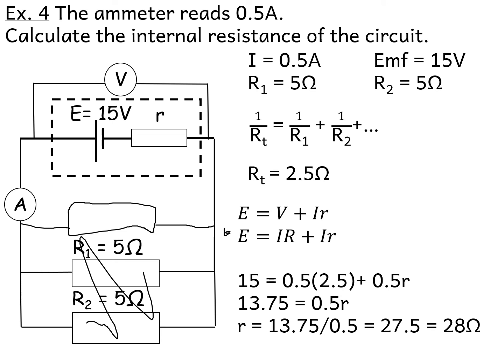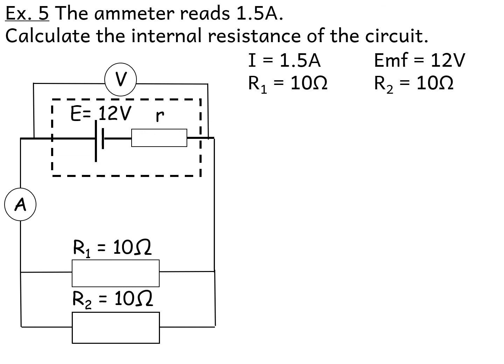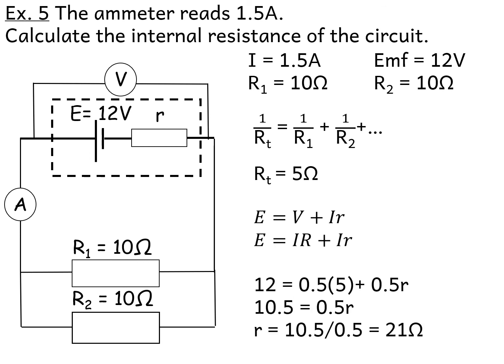Try this practice question yourself. It's similar to the previous one — two resistors in parallel, both 10 Ω, so the total resistance is simply 5 Ω using the shortcut. Write down the equation, pick the second one since we have big R and E, plug in the numbers, and the internal resistance works out to 21 Ω.